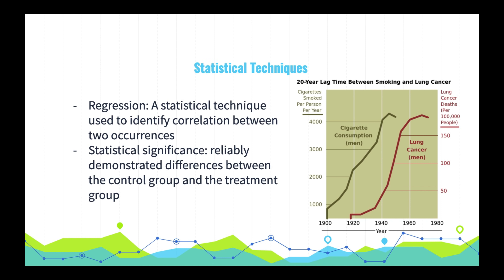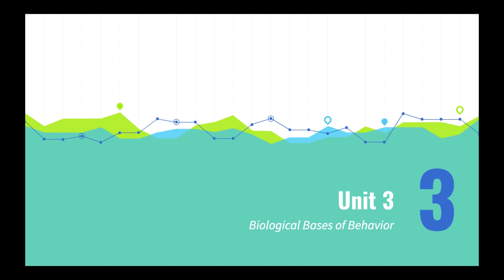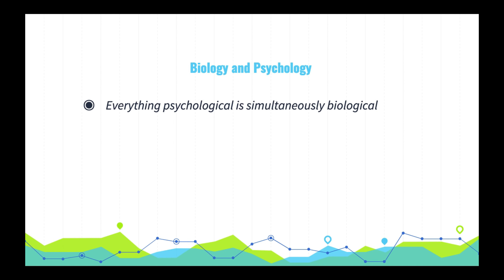Also take a few minutes to make sure you're familiar with how researchers run modern experiments and assign controls and treatment. Alright Abe, walk us through Unit 3. Gladly. A key principle: everything psychological is simultaneously biological.